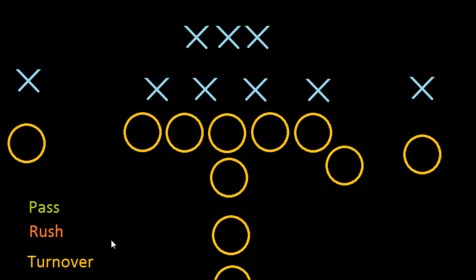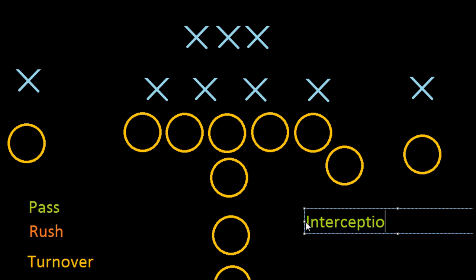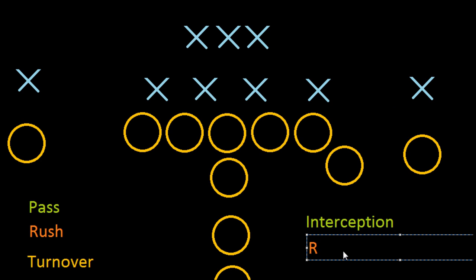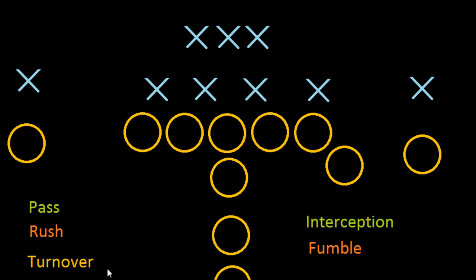To turn the ball over means that at some point during the play, the offense will lose the ball to the defense. There are two ways this can happen: the first way is called an interception, and the second way is called a fumble. Interceptions and fumbles are the two ways that the offensive team can turn over the ball to the defensive team.